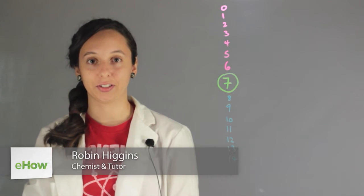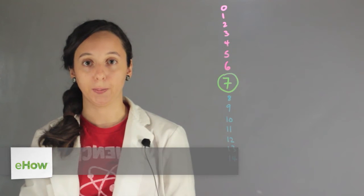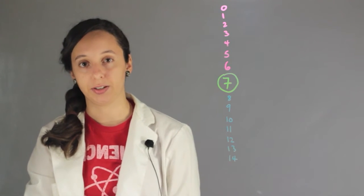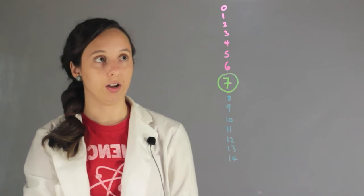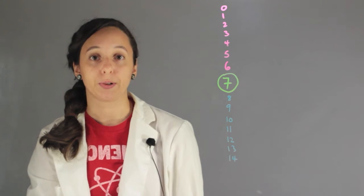I'm Robin Higgins and this is the significance of pH in everyday life. Alright, so pH is how we measure how basic or acidic something is, and it's usually on the scale of 0 to 14. You can go higher or lower, but this is the typical scale.